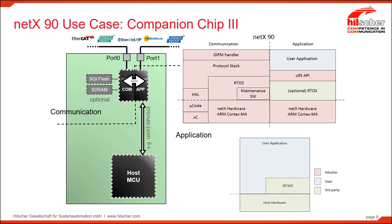The last case we're going to talk about is companion chip 3 mode. In this case, the difference is that control of the communication side of the NetX 90 is handled by the application side of the NetX 90, where all of the communications work is done. The host processor doesn't have to worry about anything related to communications — it simply talks to the application side, which may further abstract or preprocess data for the host processor.